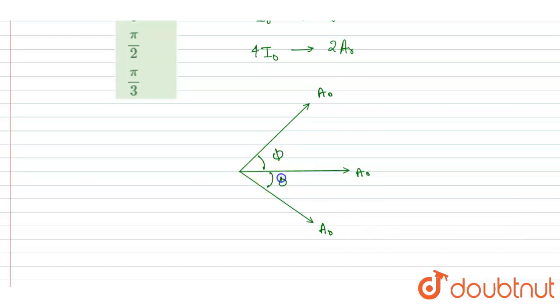So here, the vertical components will get cancelled out, and if I see the horizontal component, they will get added. So this is A₀ sin φ, A₀ sin φ, A₀ cos φ, A₀ cos φ.